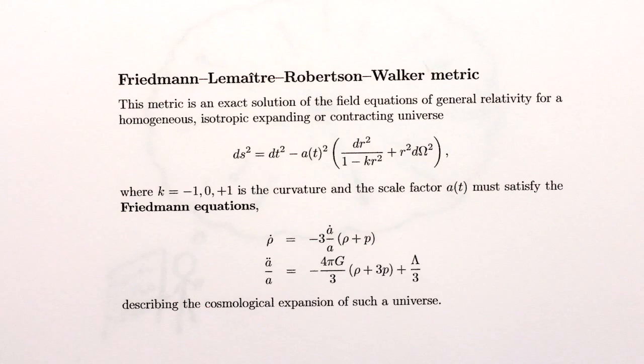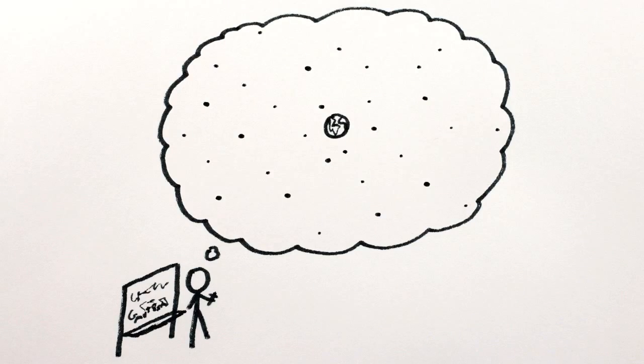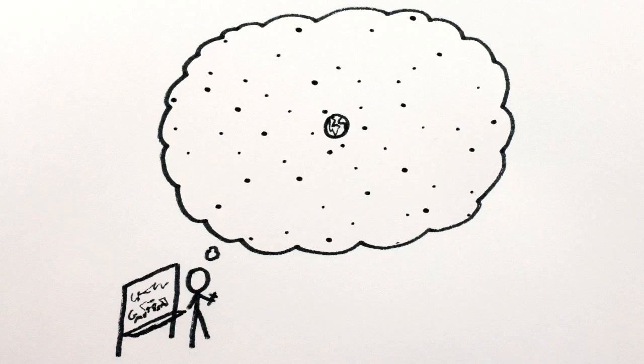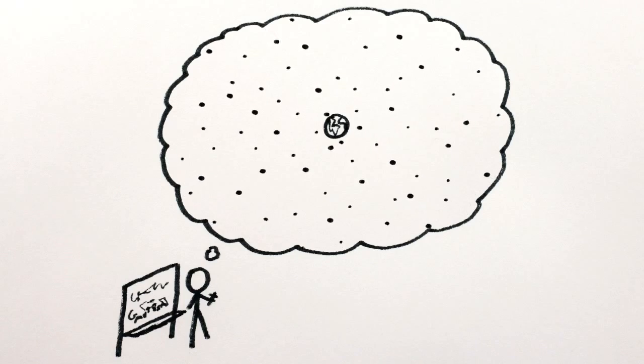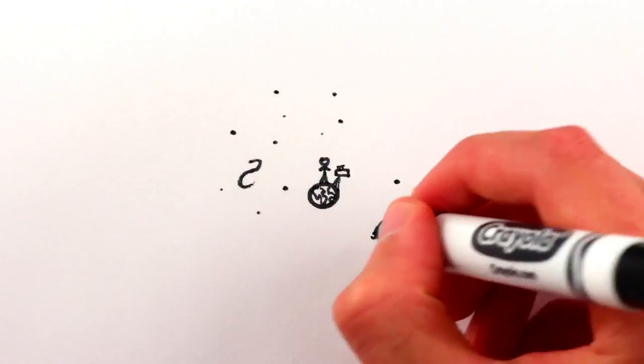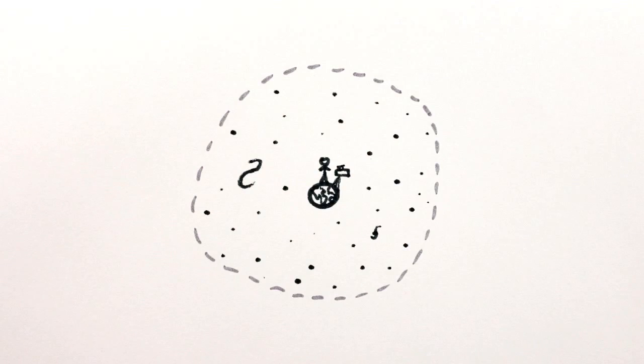This evidence, combined with the mathematics of general relativity, allowed Lemaitre to rewind cosmic history and calculate that the farther back in time you go, the smaller the universe had to be. The natural conclusion is that everything we can currently see in the universe was at one point in time, more or less at one point in space.